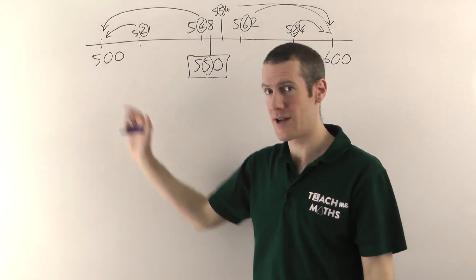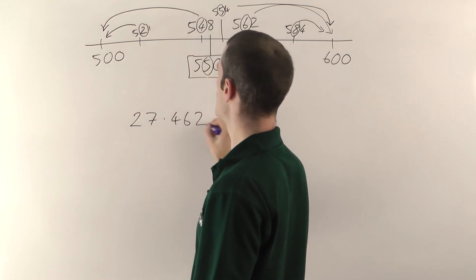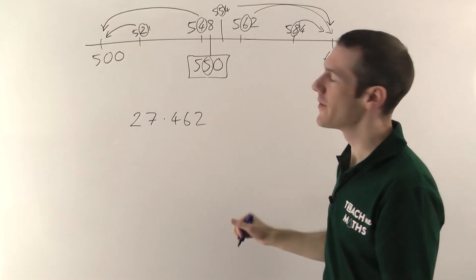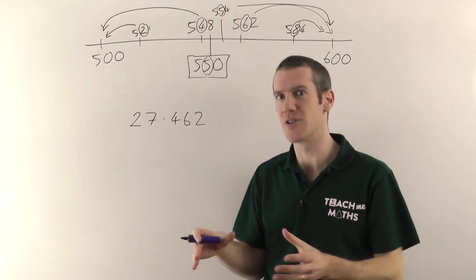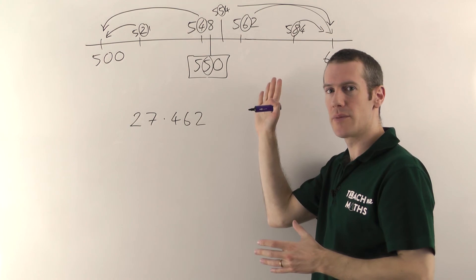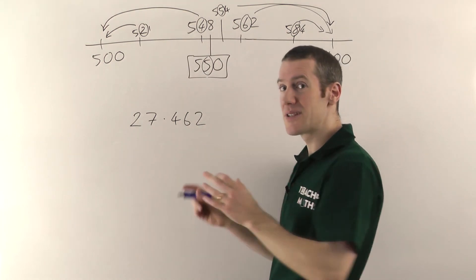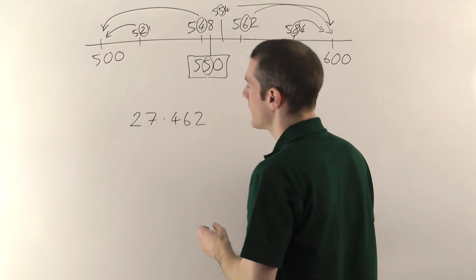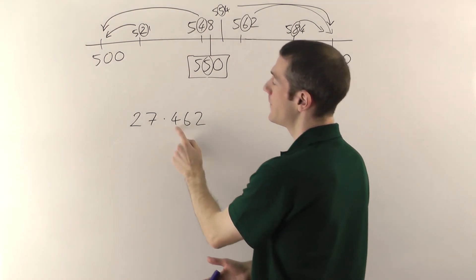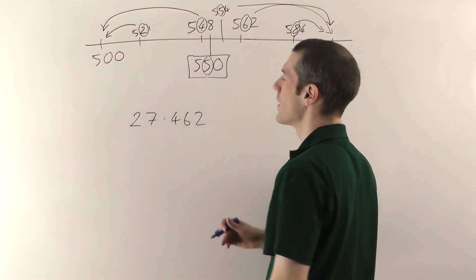Let me do some practical examples with decimal numbers. We have 27.462. Now, the way you round with decimals is exactly the same as with normal numbers. The decimal point is here, and the digits after the decimal point are the decimal places. The first digit after the decimal point is the first decimal place, the second is the second decimal place, the third is the third decimal place, and so on.